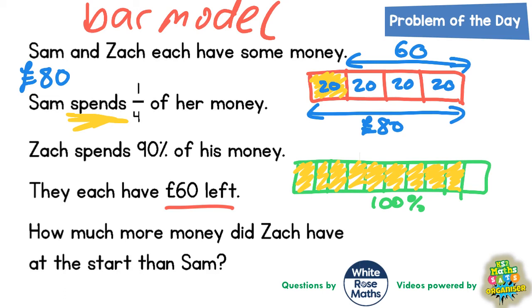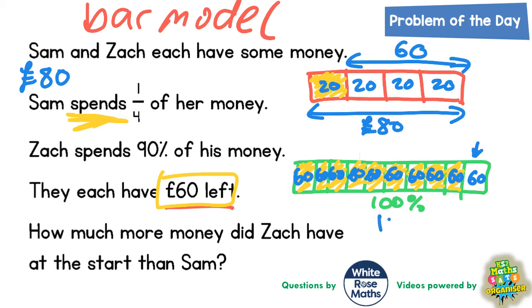He also has £60 left. So this final bar on the end must be worth £60. That means every one of his bars is worth £60, and he's got 10 bars, so he must have 10 lots of £60 at the start. And 10 times 60 is £600, so he must have started with £600.